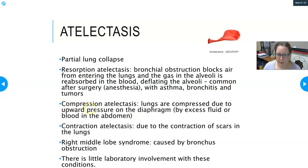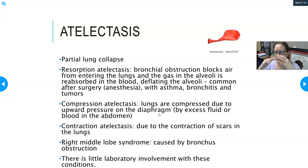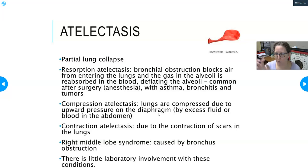Compression atelectasis occurs when excess fluid or blood in the abdomen pushes up on the diaphragm, compressing the lungs. Contraction atelectasis is due to scar tissue in the lungs — scars don't allow gas exchange and don't expand well; they pull the surrounding area inward. Right middle lobe syndrome can also be caused by a bronchus obstruction. There is very little laboratory involvement with these conditions — it's primarily the world of respiratory therapists.